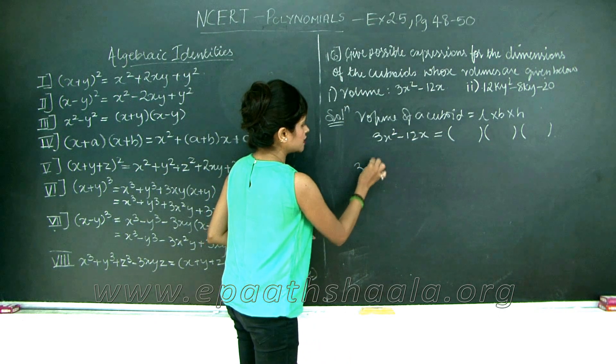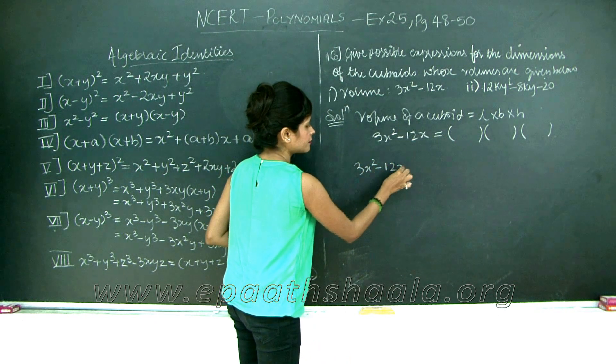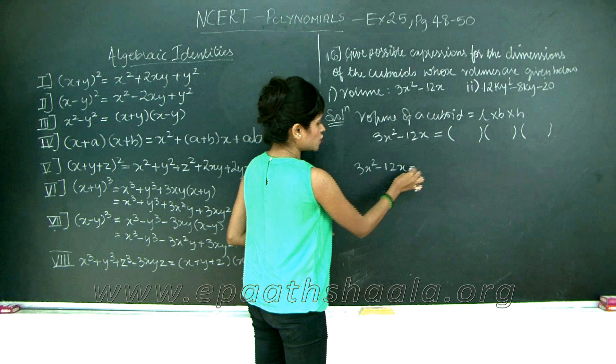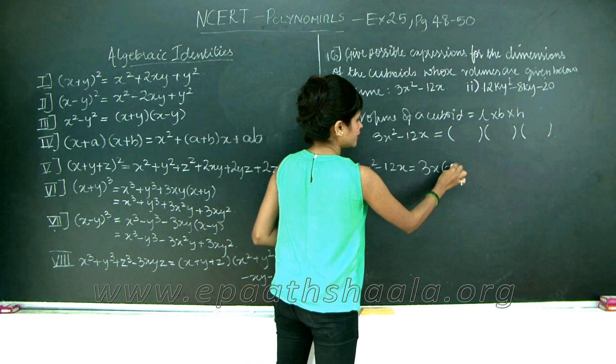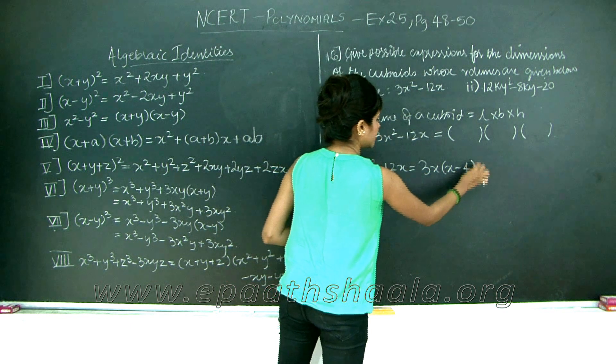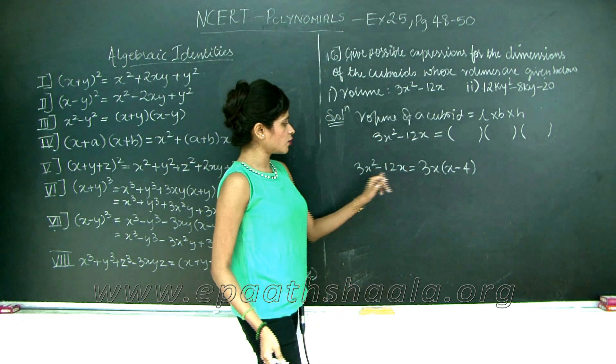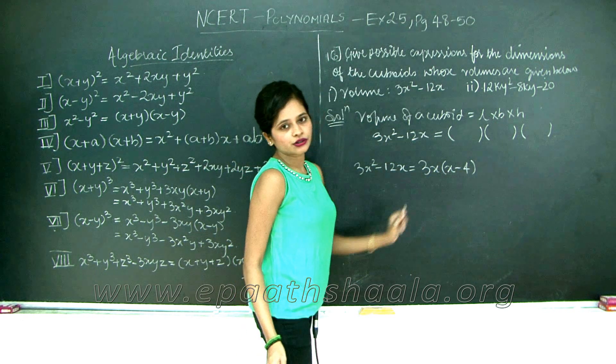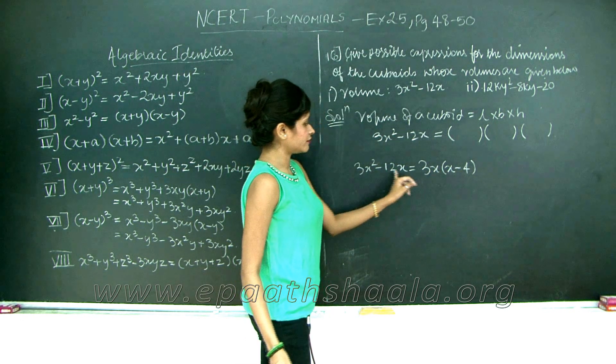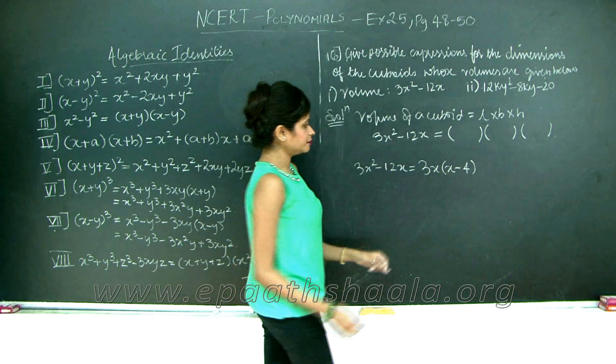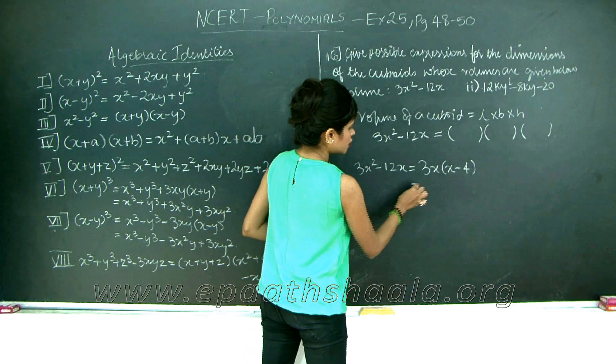Let us factorize 3x squared minus 12x. What is common between these two is 3x, so I am left with x minus 4 inside. Because 3x into x is going to give me 3x square and 3x into minus 4 is going to give me minus 12x.